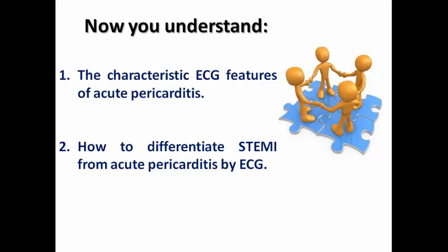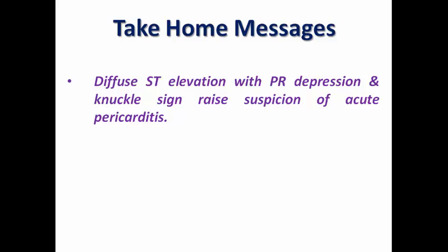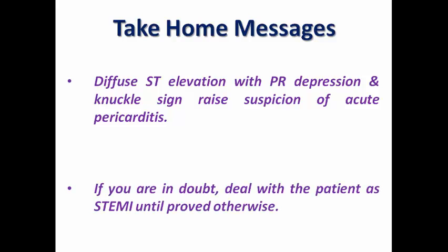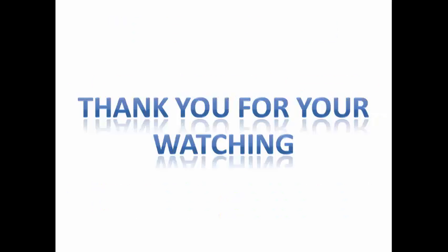In summary, we learned the characteristic ECG features of acute pericarditis and how to differentiate STEMI from acute pericarditis by ECG in the ER. Our key message: diffuse ST elevation with PR depression plus the knuckle sign raises suspicion of acute pericarditis. But if you are in doubt, deal with the patient as STEMI until proven otherwise. Thank you very much for watching.